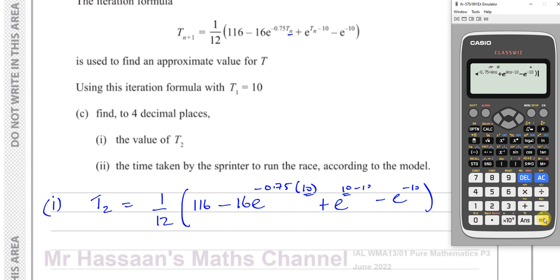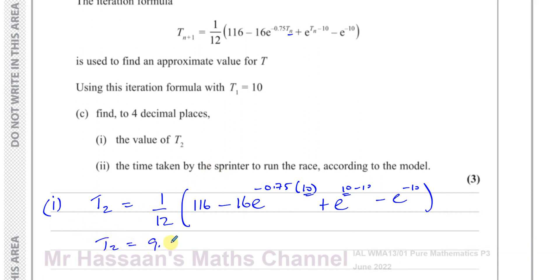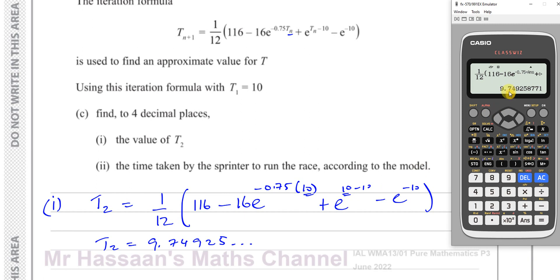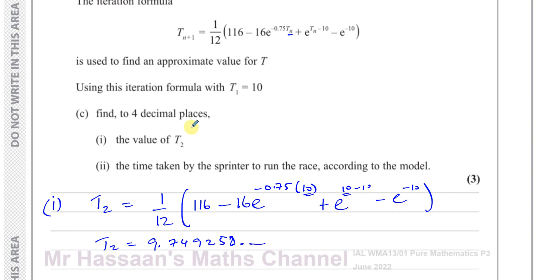Now when I press equals, it's going to give me the value of T_2. When I press equals, I get 9.74925. It continues on. I haven't rounded it, but we have to round to 4 decimal places. So therefore, we can say T_2 is equal to 9.7493. So there's your answer to part 1.